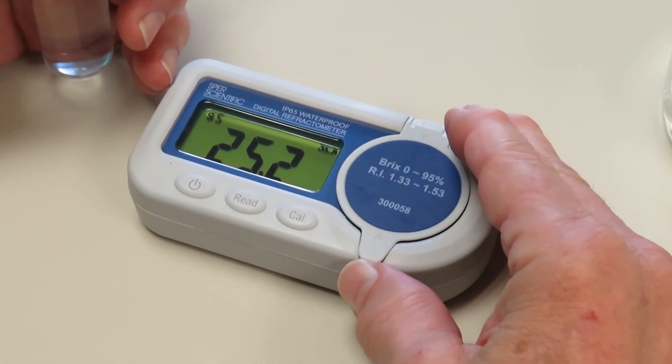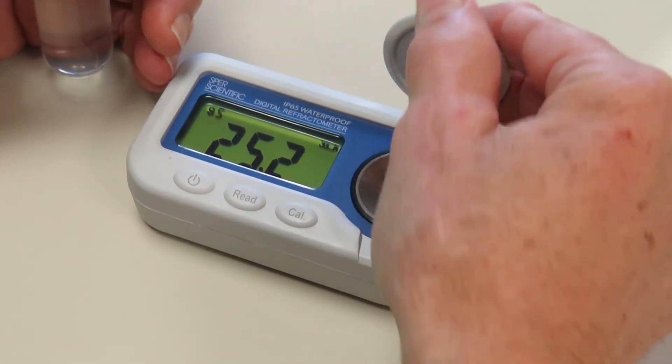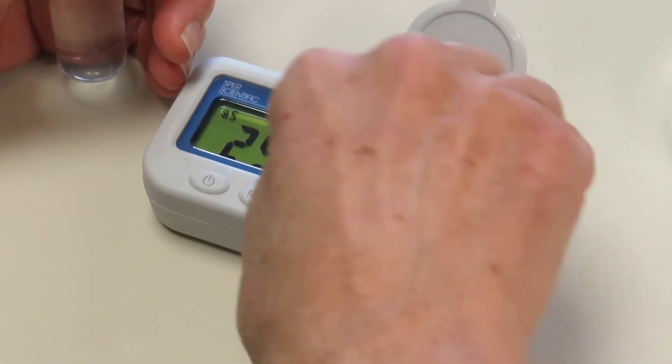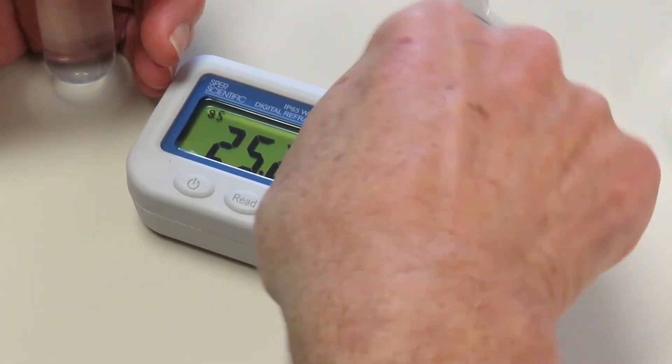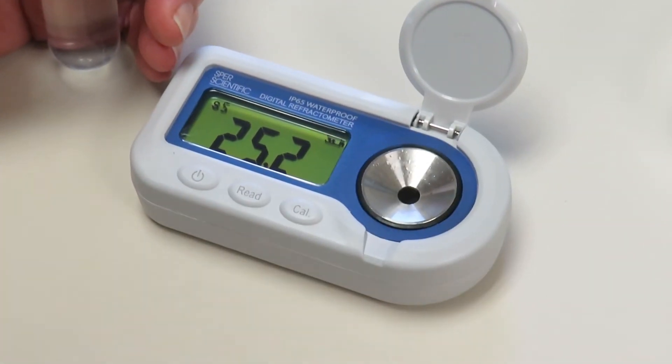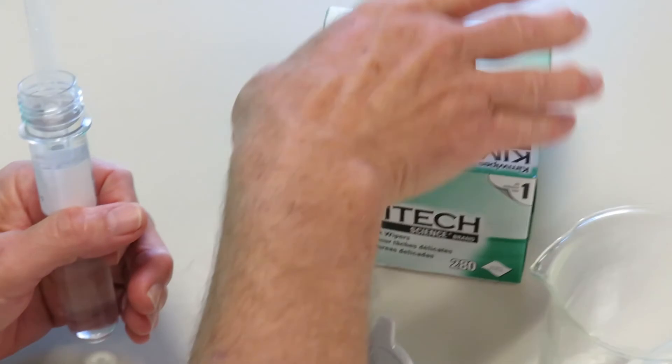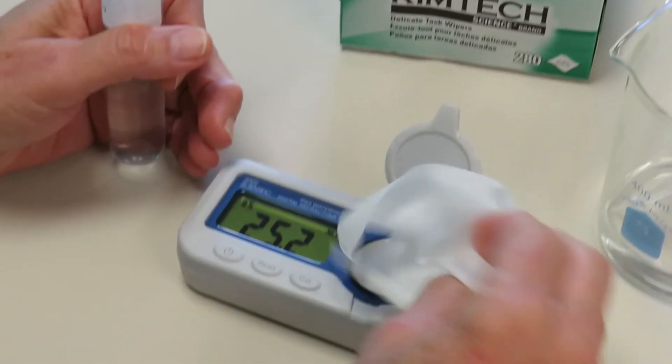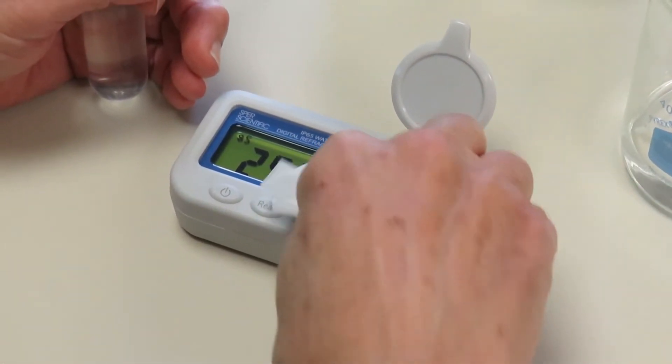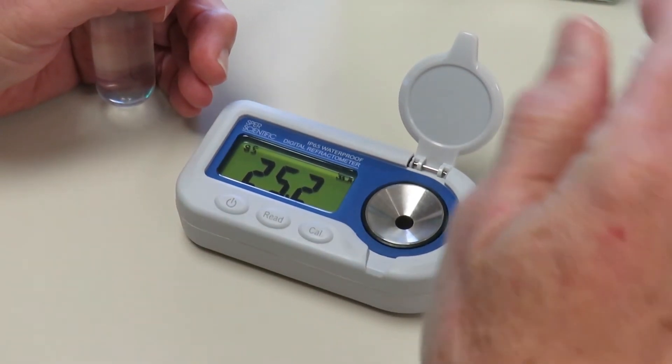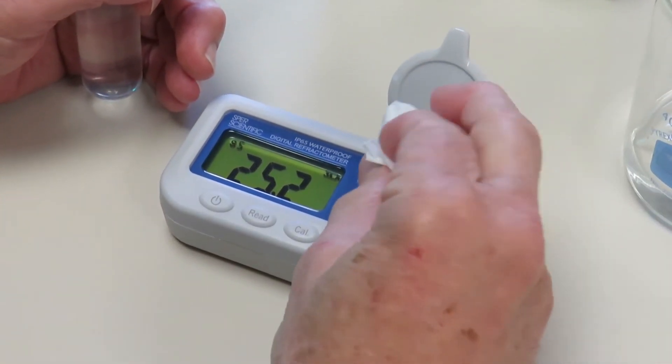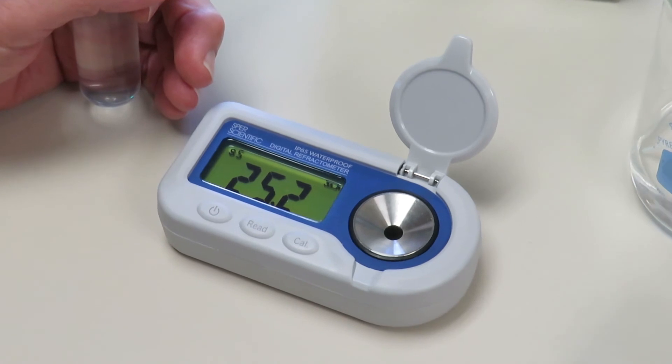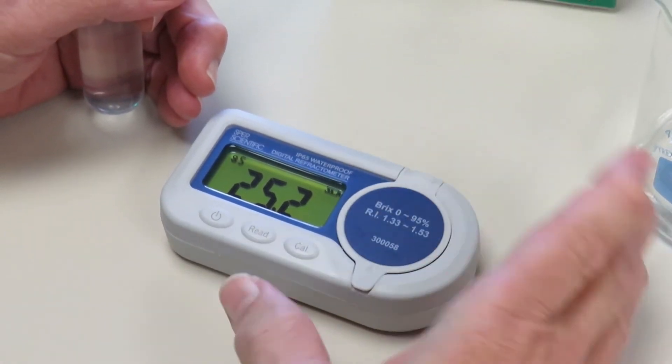We just have to make sure between readings and between solutions that we clean the lens off very carefully, and that we use a lint-free cloth like I'm using here, because any kind of lint will give you a false reading as the instrument is very sensitive. So you just rinse that with water, and now you can take the reading of a different substance. And that's it.